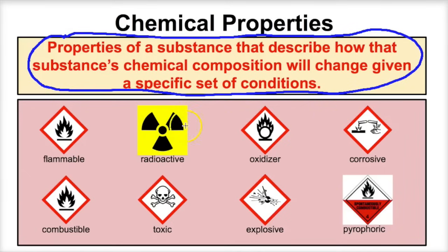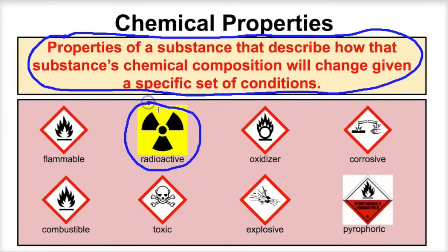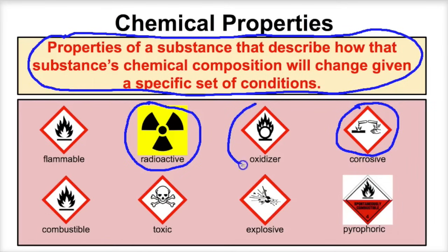If we take a look at a few examples of chemical properties: if I said gasoline is flammable, that tells you how that gasoline is going to react when exposed to an open flame. If we said a substance was radioactive, that tells you how the nucleus of that atom is going to change over time. If we said that something is corrosive — battery acid is corrosive — that tells you how that acid is going to behave chemically. If we said that a chemical was an oxidizer, which means it has the ability to strip an electron off another substance, that would be a chemical property of that substance.